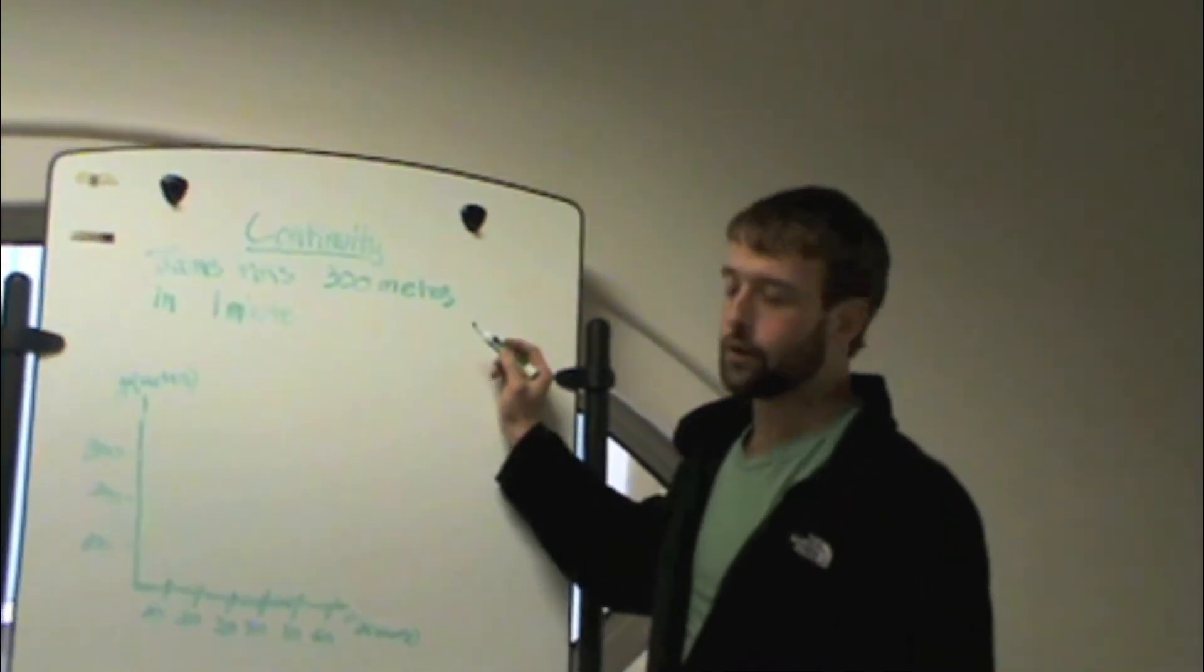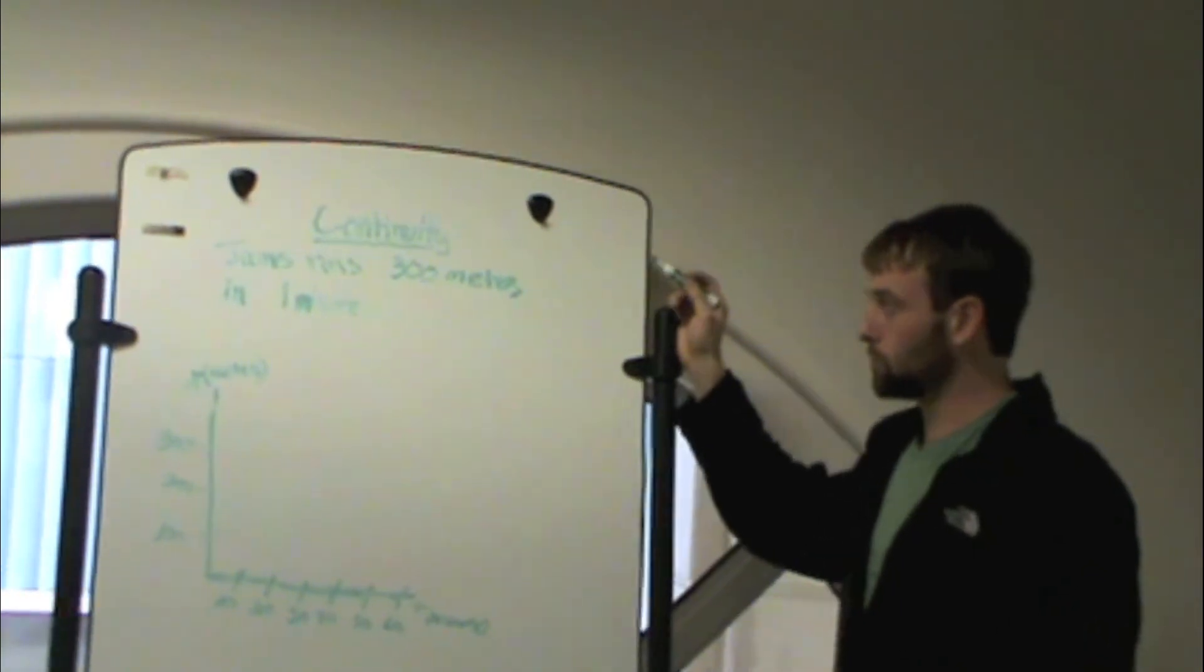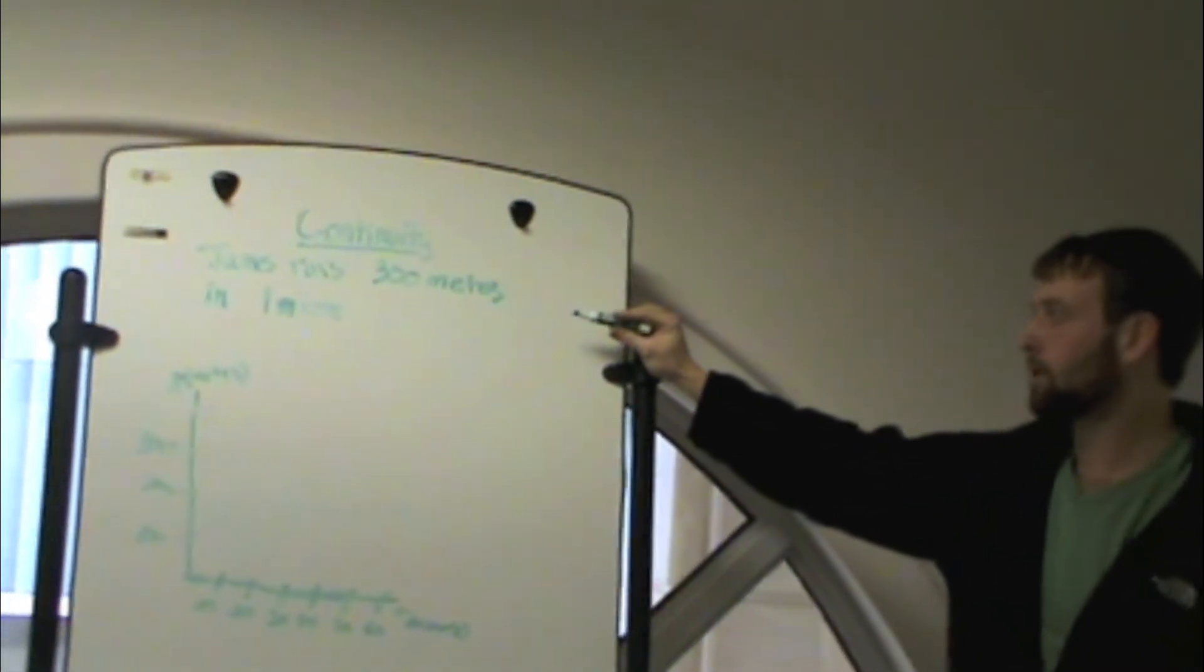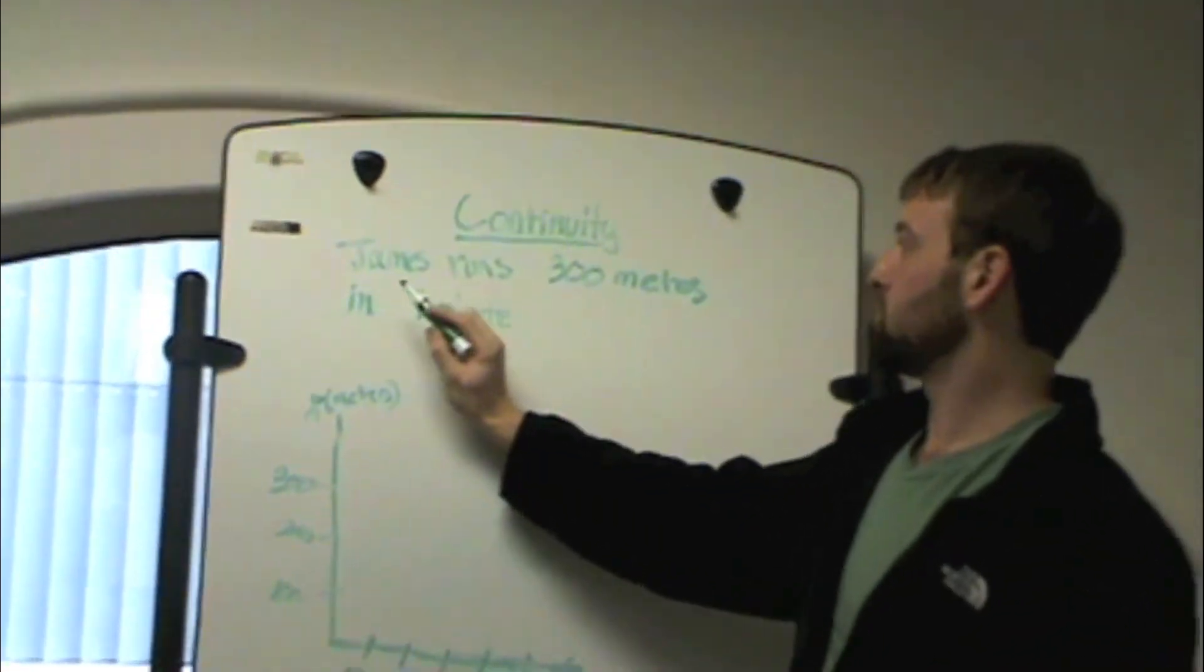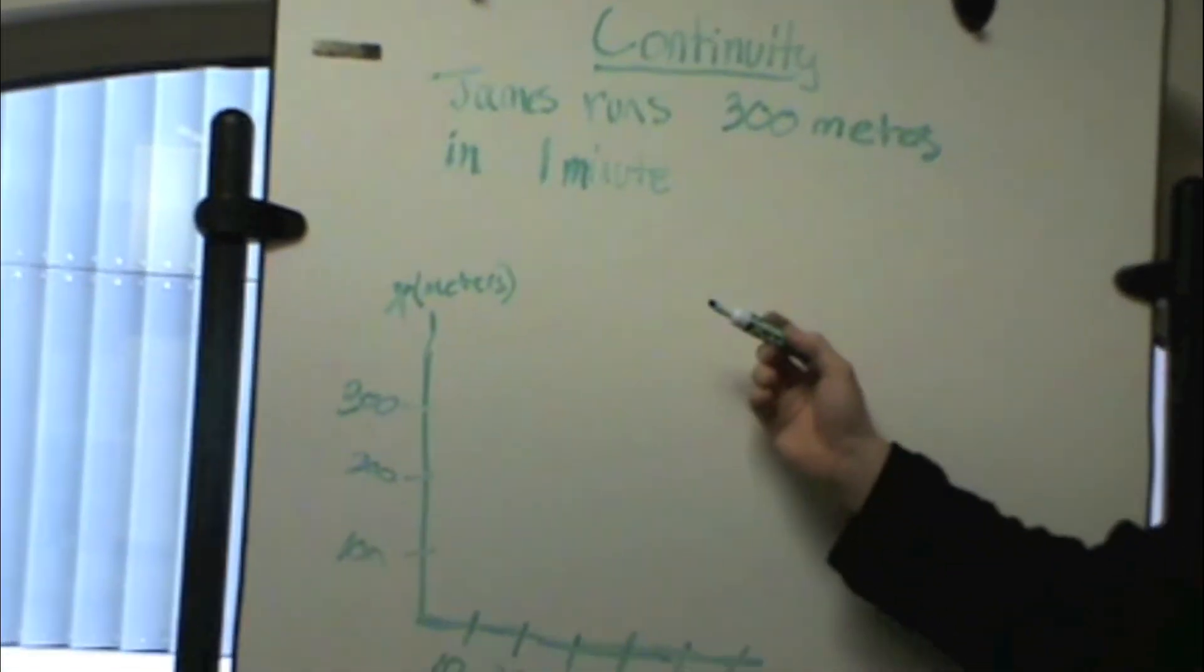Now we're going to go over how continuity exists in the real world. And to do this, we have a simple problem that basically states James runs three hundred meters in one minute. And then to show this, we've drawn a graph.